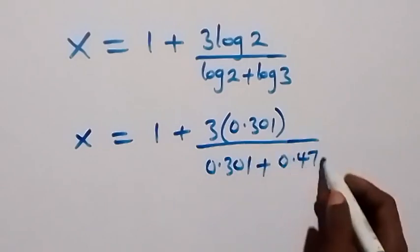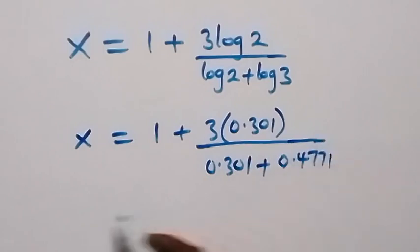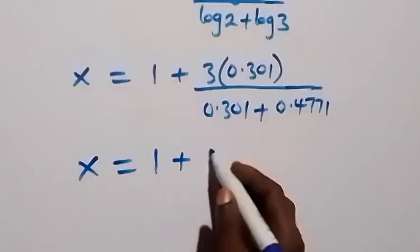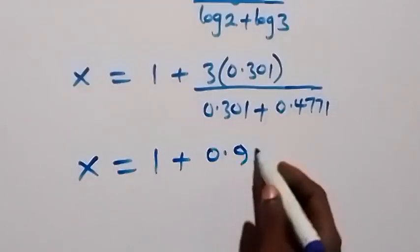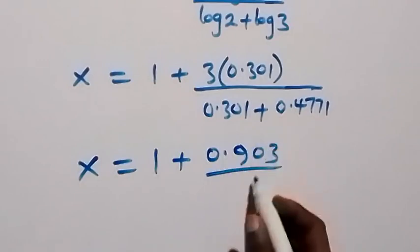Then here we have x equals 1 plus 0.903 over 0.7781.